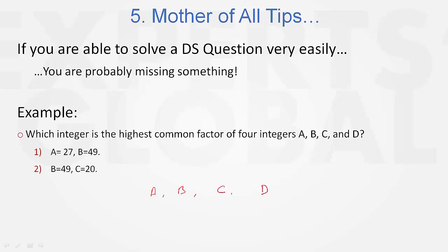The highest common factor would be something that divides each of them. Statement one says that A is 27 and B is 49. What is the highest integer that divides each of them? The highest integer is 1 — they don't have anything in common. So no matter what C and D are, the highest common factor is going to be 1 only. C and D are not needed. Statement one alone is sufficient.